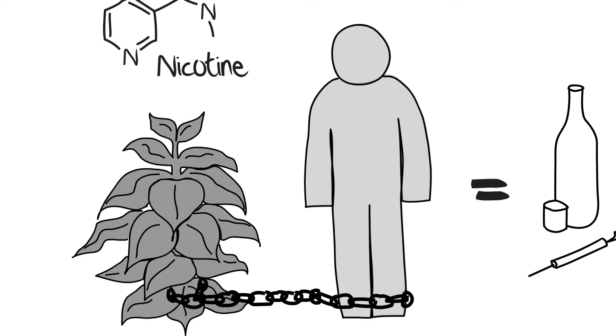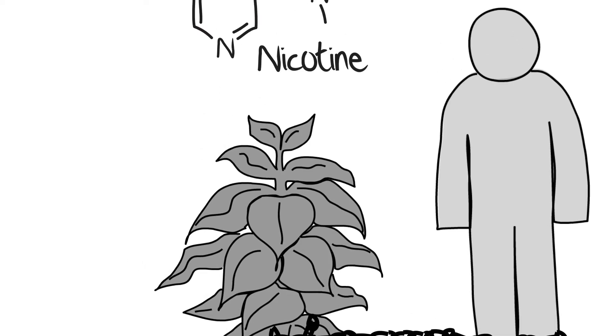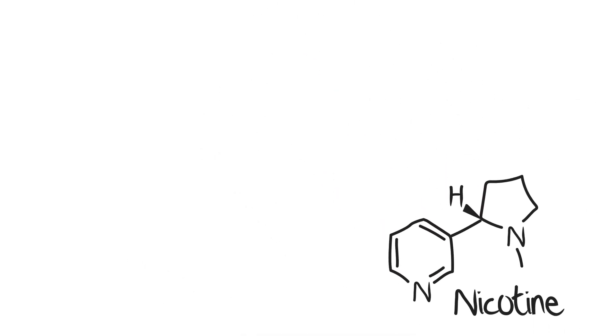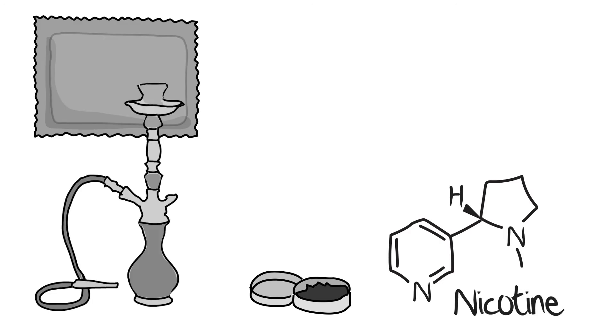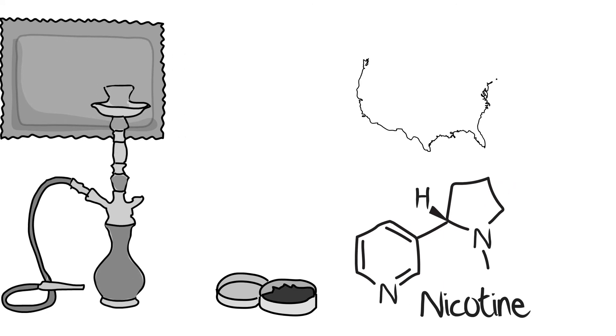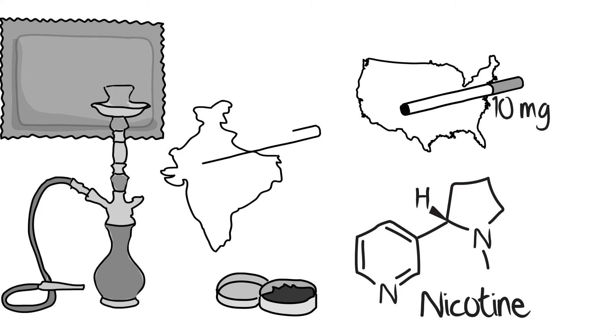Nicotine is a natural ingredient in tobacco. The amount of nicotine in a tobacco product varies widely, depending on the type of tobacco product as well as where it's produced. For example, a typical cigarette manufactured in the United States contains about 10 mg of nicotine. However, cigarettes in India contain around 15 mg of nicotine and biddies contain around 27 mg.